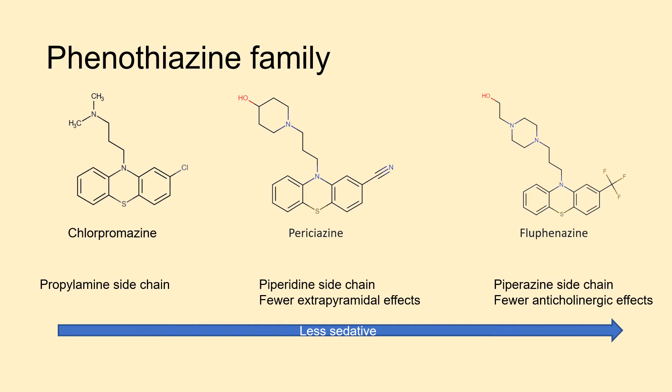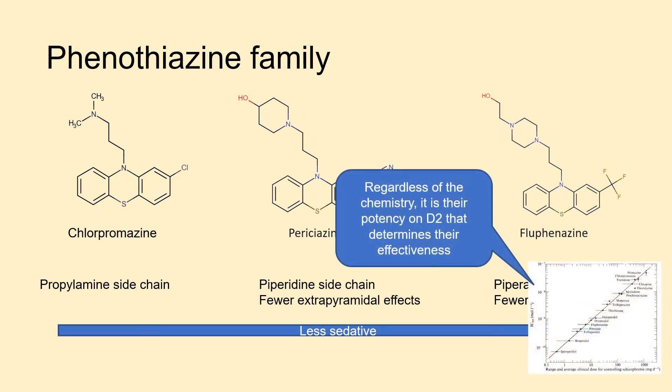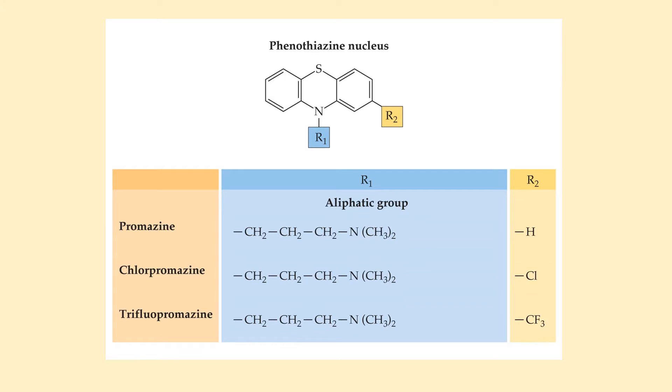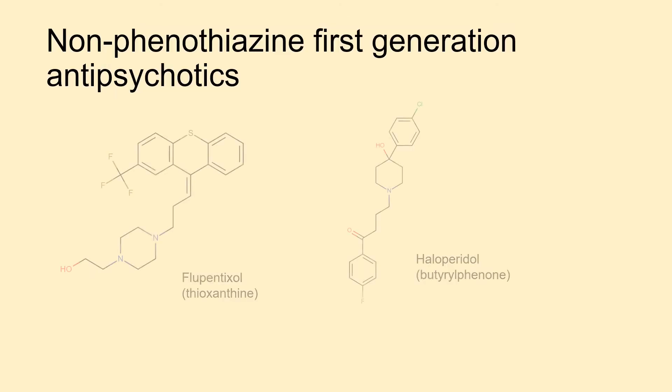You might notice that chlorpromazine looks structurally similar to carbamazepine. Although these drugs have different chemistries, what ultimately matters is how potent they are at the D2 receptor. The phenothiazine scaffold has two R-group positions where different substitutions produce molecules with slightly different properties. There are also non-phenothiazine molecules that are still considered first-generation antipsychotics. The terms 'first generation' and 'second generation' — or atypical — antipsychotics relate to history rather than any meaningful pharmacological distinction.